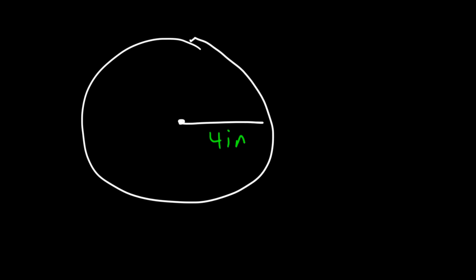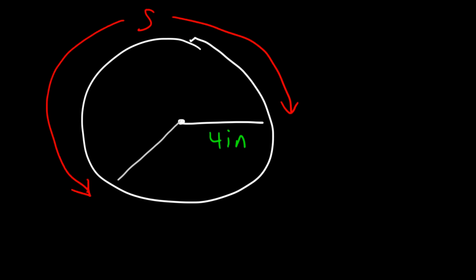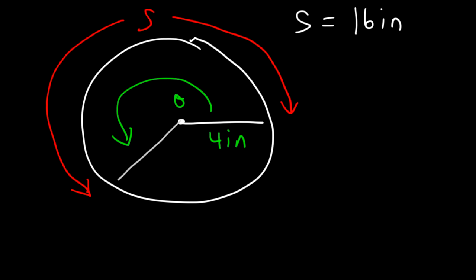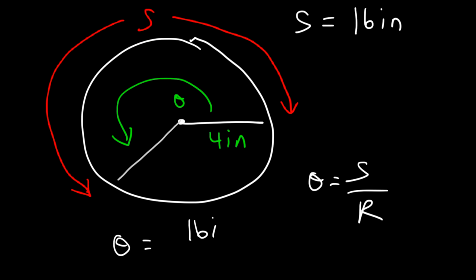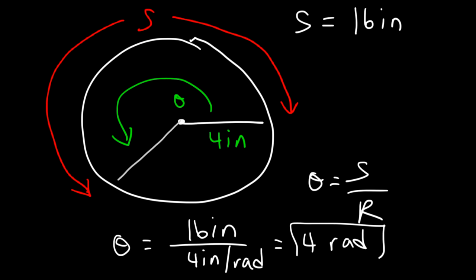Let's work on another example. The radius is 4 inches and the arc length s is 16 inches. Calculate the angle theta. Theta equals s divided by r, so 16 inches divided by 4 inches per radian gives you 4 radians.